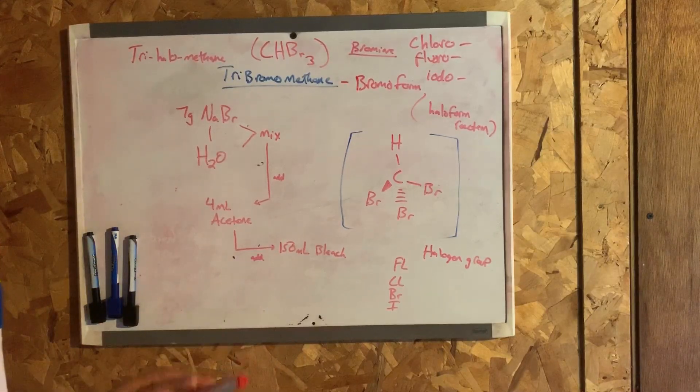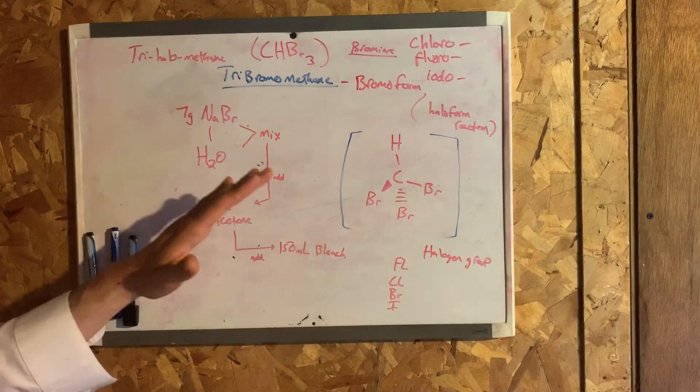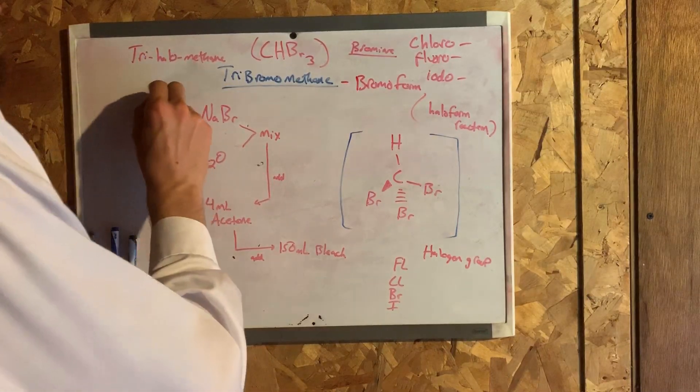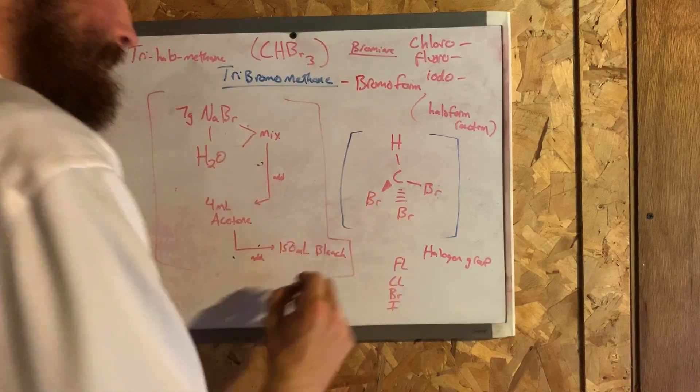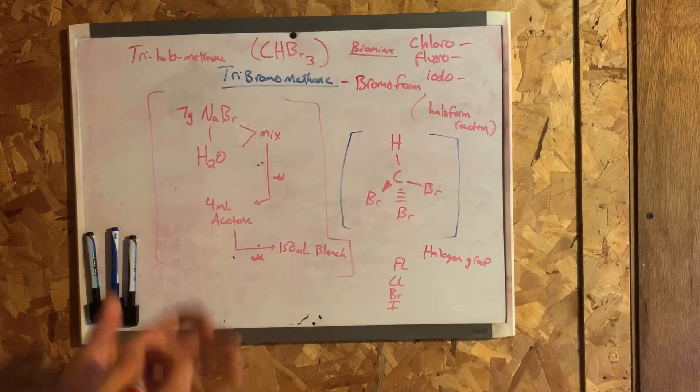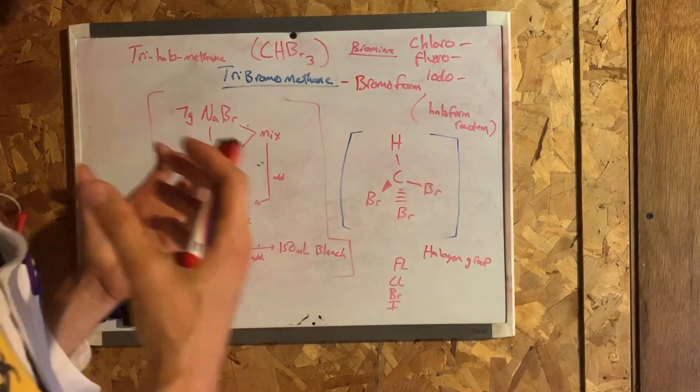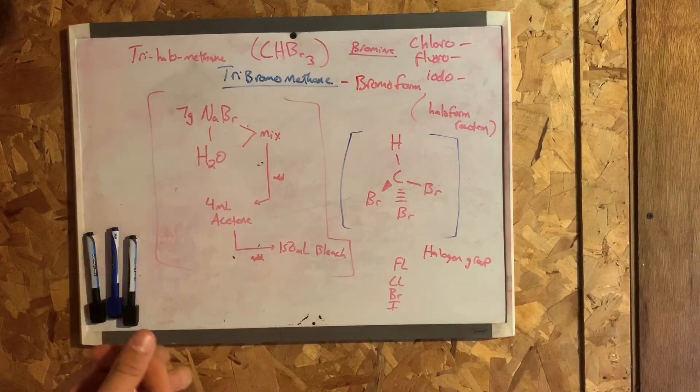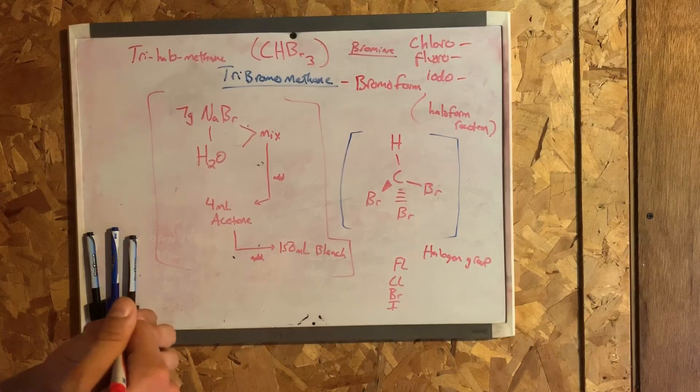Now bromoform can be prepared using the haloform reaction. In this case, this is our setup here, this is what we're going to do in the laboratory using the haloform reaction. So I'm going to begin by using acetone and sodium hypobromite, or bleach, along with an aqueous solution of sodium bromide.